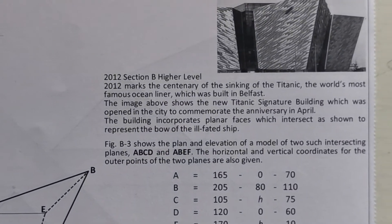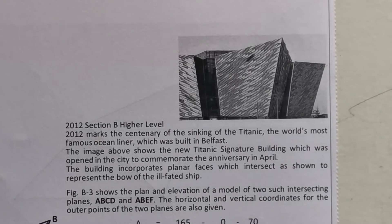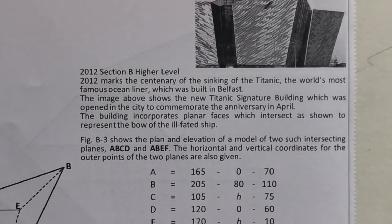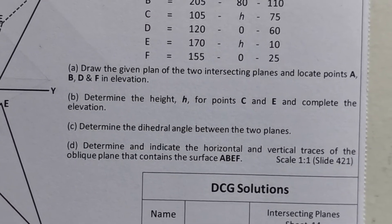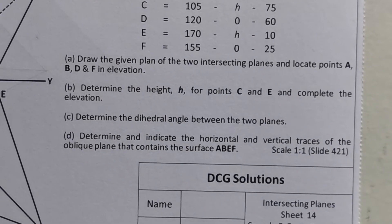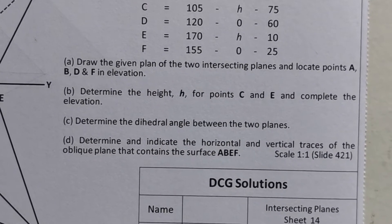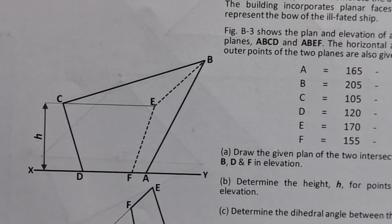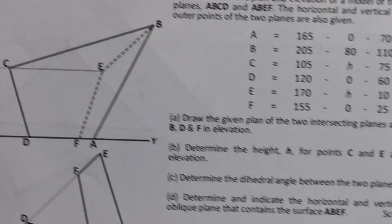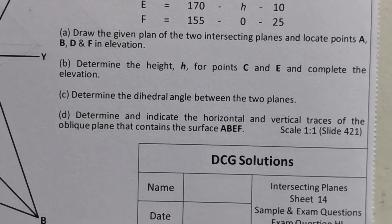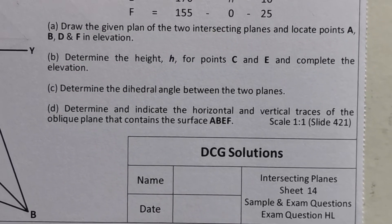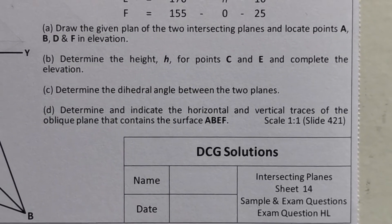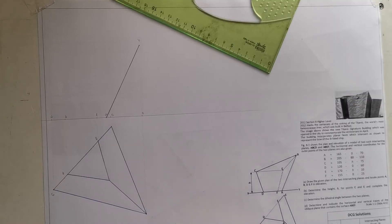Quick look at this 2012 question, what's referred to as the Titanic building question. What you're asked to do is set up the planes and find the heights for points C and E. That was a key thing - finding the heights for those points C and E that you can see in the front view, then get the dihedral angle and the horizontal and vertical traces of plane AB-EF.